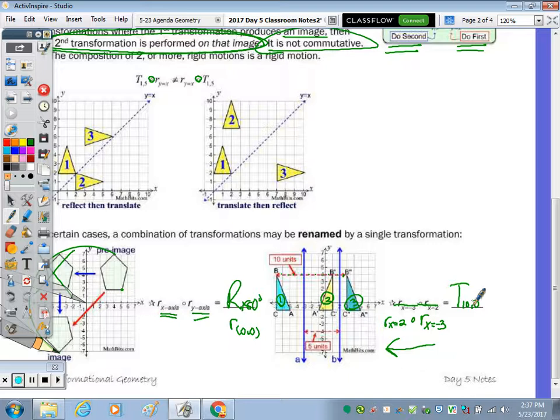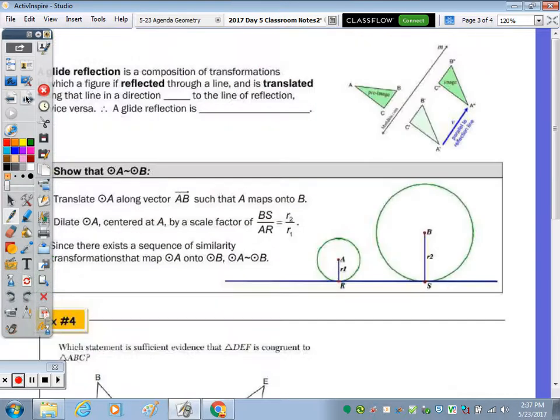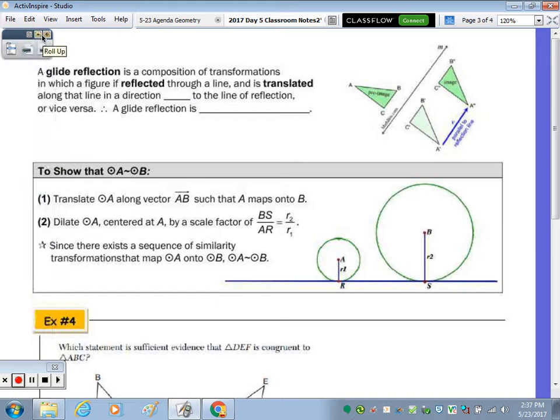A special composition is the glide reflection. A glide reflection is a transformation in which the glide is the slide, and reflection is obviously the reflection. So it's the composition in which a figure is reflected through a line, but the key thing is that it's moved along a line parallel to the line of reflection. That's a glide reflection. So at first we went from here to here, and then it was moved. This arrow right here is parallel to that line of reflection, so the vector is parallel to the line of reflection. Now, with a glide reflection, it doesn't matter the order in which you do it. It's the special one. So therefore, a glide reflection is commutative.